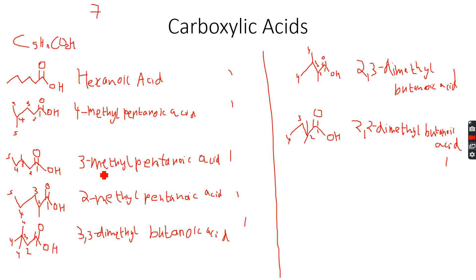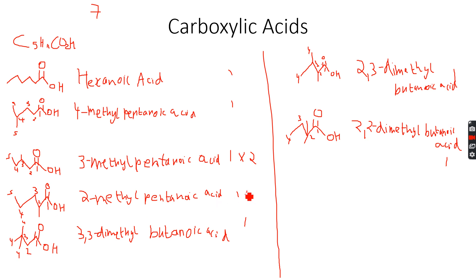For the third one, there are no carbon-carbon double bonds so no geometric isomers. However, the third carbon atom is a chiral center, so it will exist as two optical isomers. Similarly, for the next isomer, the second carbon atom is a chiral center, giving two optical isomers but no geometric isomers.